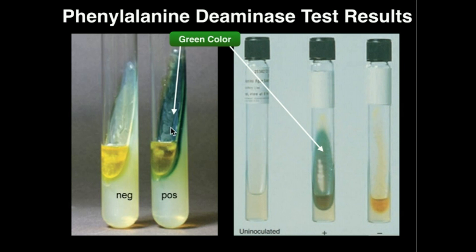However, you can see here we have a very dark greenish color developed on the slant. This is going to be a positive result for the phenylalanine deaminase test, indicating that we have either Proteus or Providentia. You can see the same results over here as well.